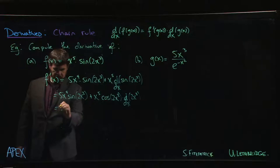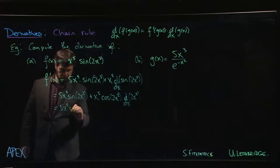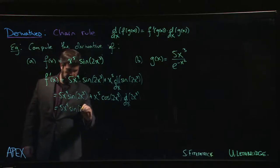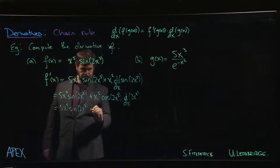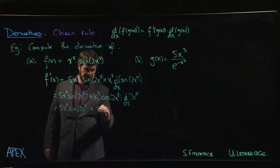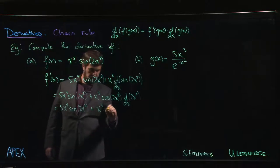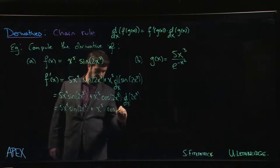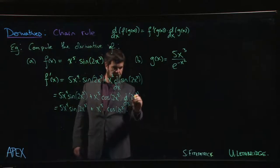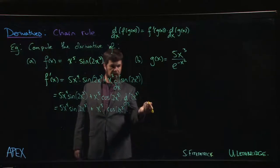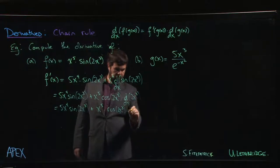So we have 5x to the 4 times sine of 2x cubed. So the derivative of x cubed is 3x squared. So 3 times 2 gives us 6x squared.